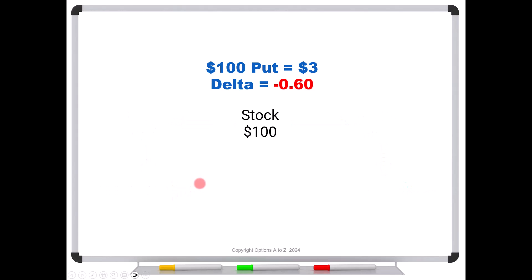Now put options work in the same way, same idea, but they're just opposite. So their deltas will always be negative. And so the way you want to interpret that is if the stock price is up, put prices down, moves in the opposite direction, stock price down, put price up.